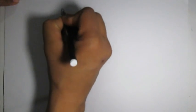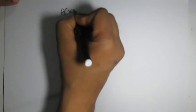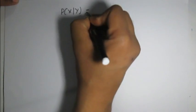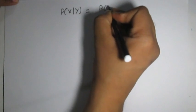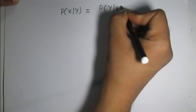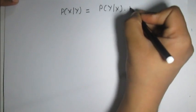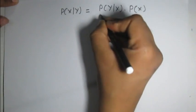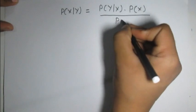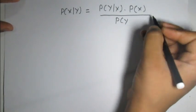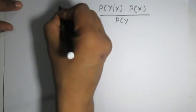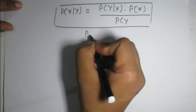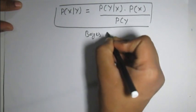P(X given Y) is equal to P(Y given X) times P(X) divided by P(Y). This is a very important formula known as Bayes' theorem.